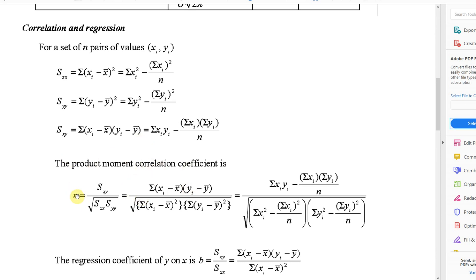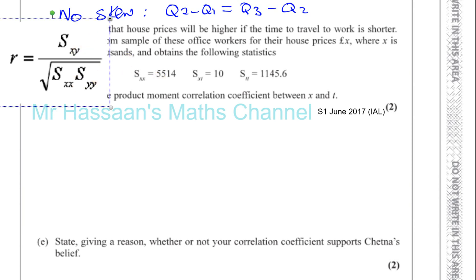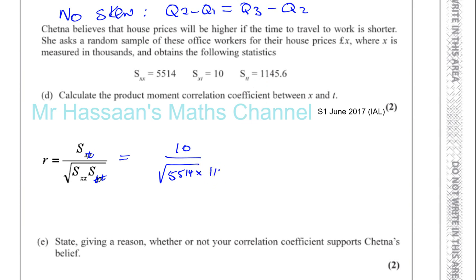So what we can do here is we can just put everything in the right place. This is going to be a T here and this is going to be a T and a T. So SXT is 10 divided by the square root of 5514 multiplied by 1145.6, and that should give us the value of R. So we're going to have 10 over the square root of 5514 times 1145.6, and that gives us the value of R which is really small.